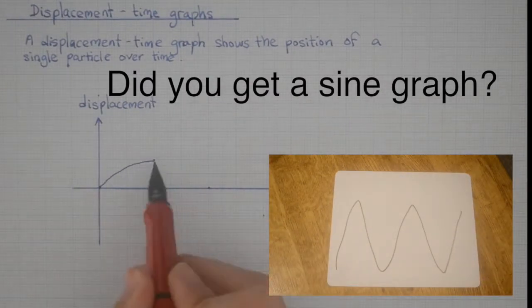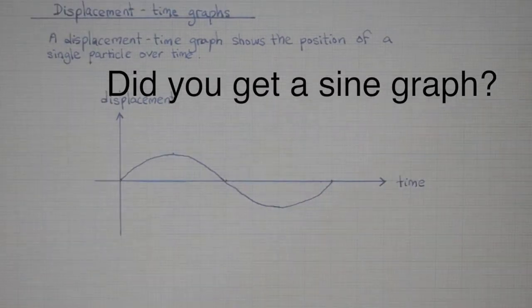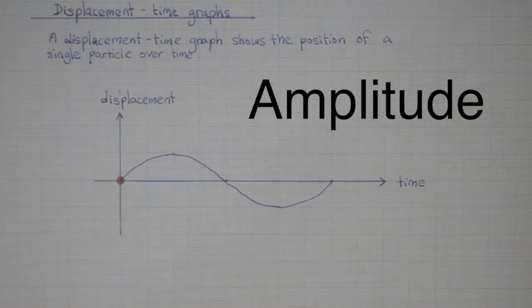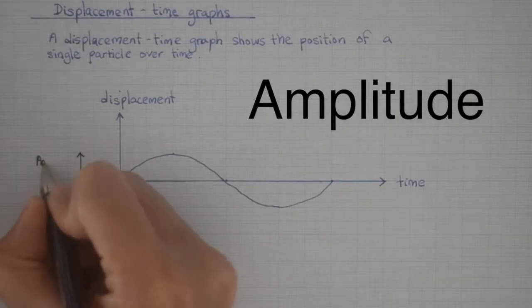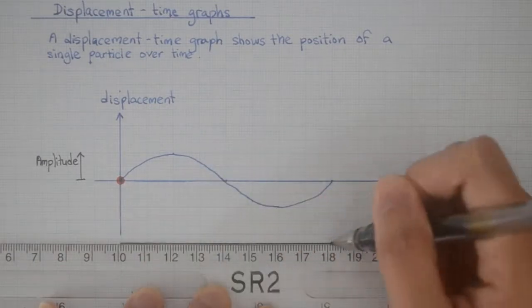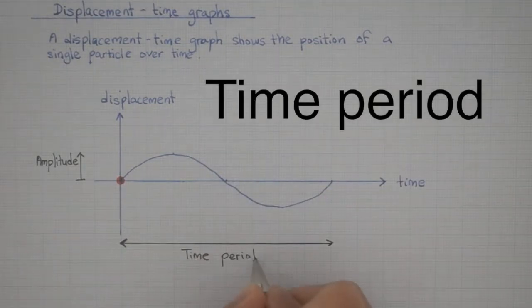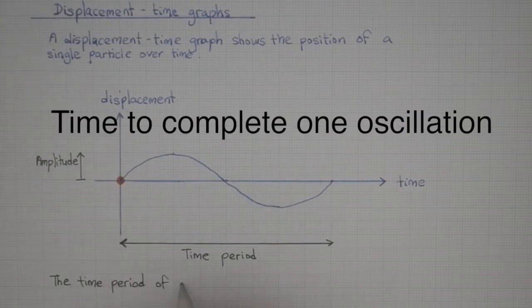A displacement-time graph tells us two quantities. It tells us the amplitude, just like a displacement-distance graph. But on the time axis, it gives us the time period. The time period of a wave is the time it takes for the particle to complete one single cycle of oscillation.